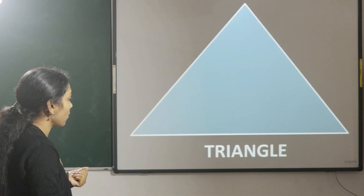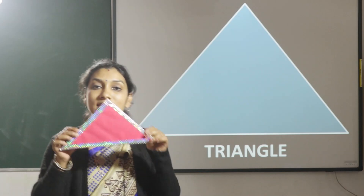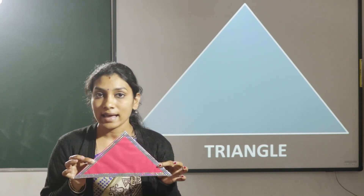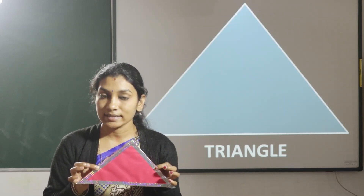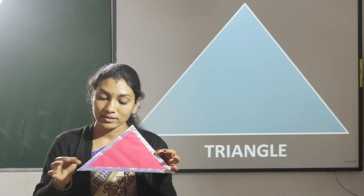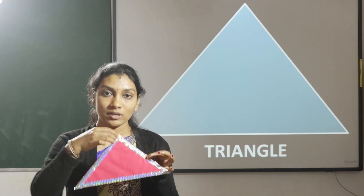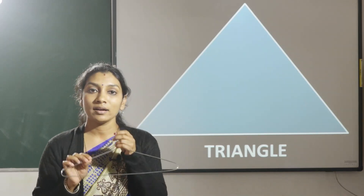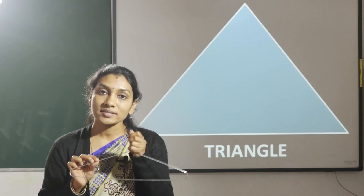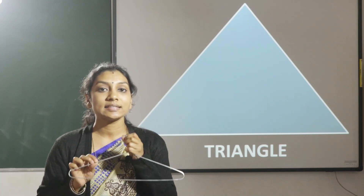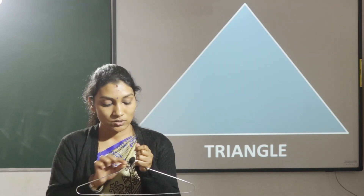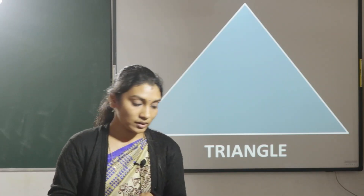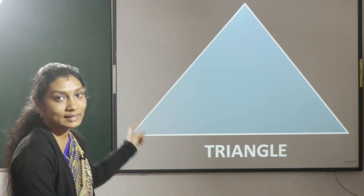Now let us see the shape of a triangle. A triangle has three sides — one, two, three. Now here I have a hanger. So what's the shape of this hanger children? It is a triangle — it has three sides: one, two, three. A triangle has three sides.